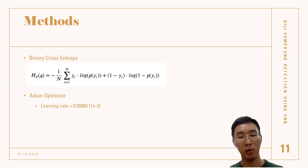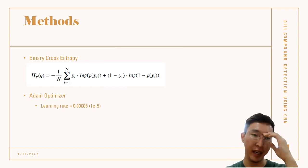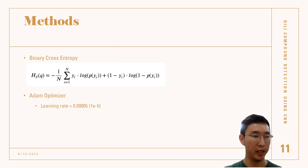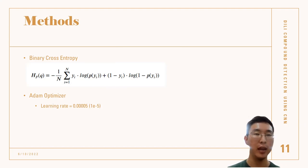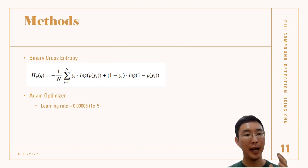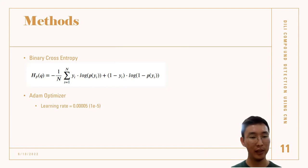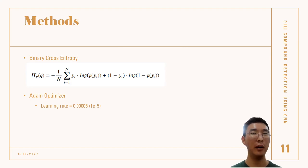I used binary cross entropy, which compares each of the predicted probabilities to the actual class output, which can be either zero or one since we are using binary classification. I also used the Adam optimizer. I didn't tinker with hyperparameters such as weight decay and only used the learning rate, with all other values at default. I found that 0.0005 or 1×10⁻⁵ was the best learning rate, as anything higher led to overfitting and anything lower led to an extreme amount of training time.